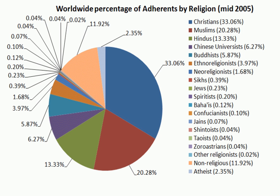The religion and belief system of the Indus Valley people have received considerable attention, especially from the view of identifying precursors to deities and religious practices of Indian religions that later developed in the area. However, due to the sparsity of evidence, which is open to varying interpretations, and the fact that the Indus script remains undeciphered, the conclusions are partly speculative and largely based on a retrospective view from a much later Hindu perspective.